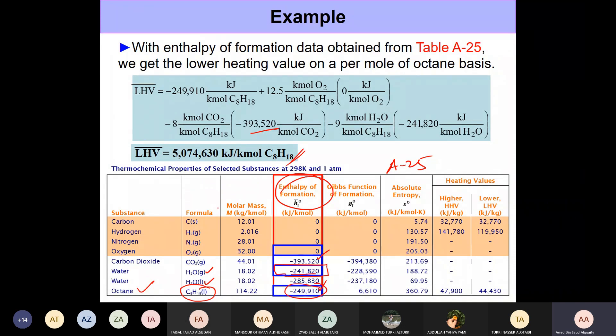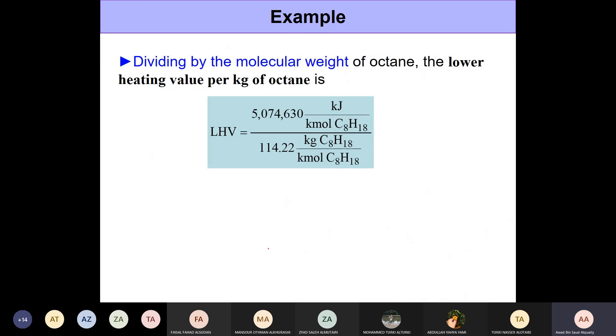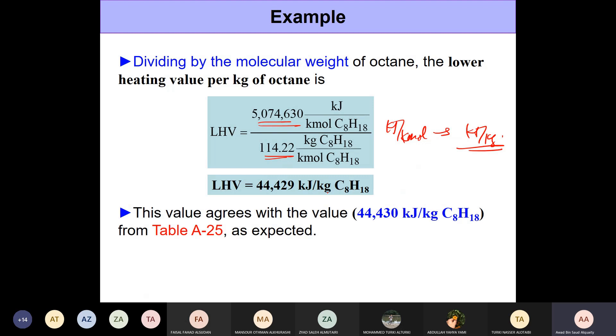To convert from kilojoule per kilomole to kilojoule per kilogram of fuel we need to divide by the molar mass of the fuel. The molar mass of fuel is given in Table A-25 - it's 114.22. When you do the math it comes out to be 44,429 kilojoule per kilogram of octane, and this compares very well with the value given in the table which is 44,430.